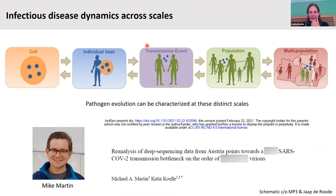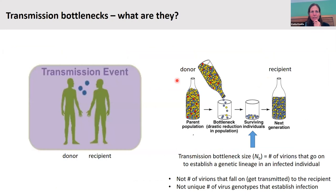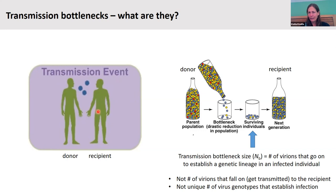In terms of transmission bottlenecks and what they are: we're thinking about an individual who's infected — an index case or donor individual — who is transmitting the virus to a recipient host. During this transmission event, a certain number of virions get across, and a subset of those found the viral infection. The transmission bottleneck size is really the founding population size of virions that initiate infection in the recipient and contribute to the genetic lineage within that recipient.